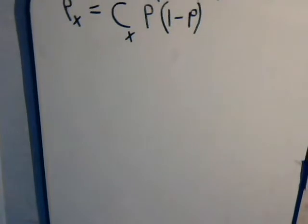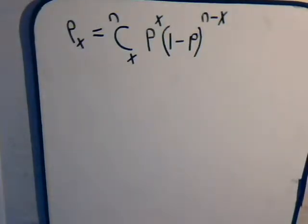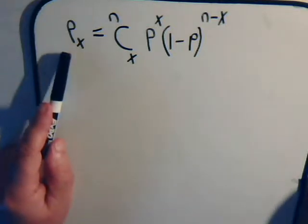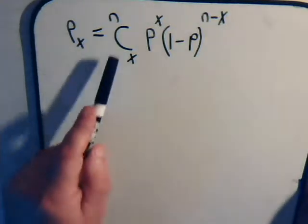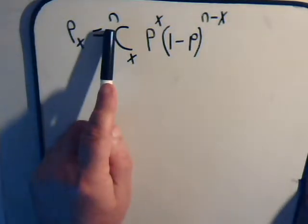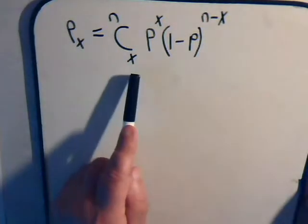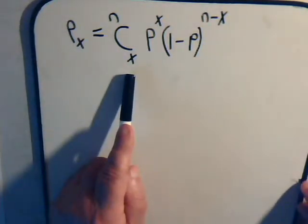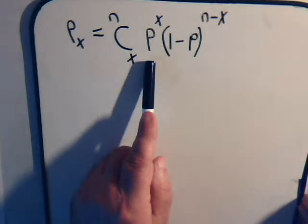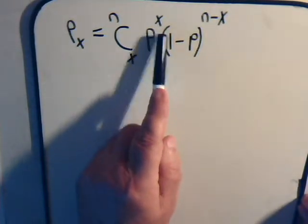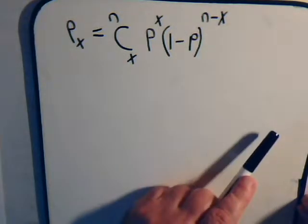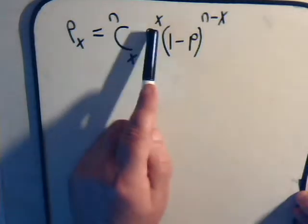The formula developed in the previous videos, starting with video number 10 and continuing with video number 11, is this: the probability of X number of successes equals a combination where we have n separate trials and out of those n trials we had X number of successes. P is the probability of a success raised to the X exponent, and (1 minus P) is the probability of failure raised to the exponent of n minus X.